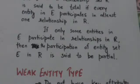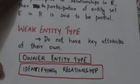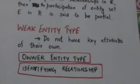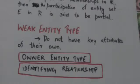Weak entity types are those entity types that do not have key attributes of their own. Entities belonging to a weak entity type are identified by being related to specific entities from another entity type, in combination with one of their attribute values.